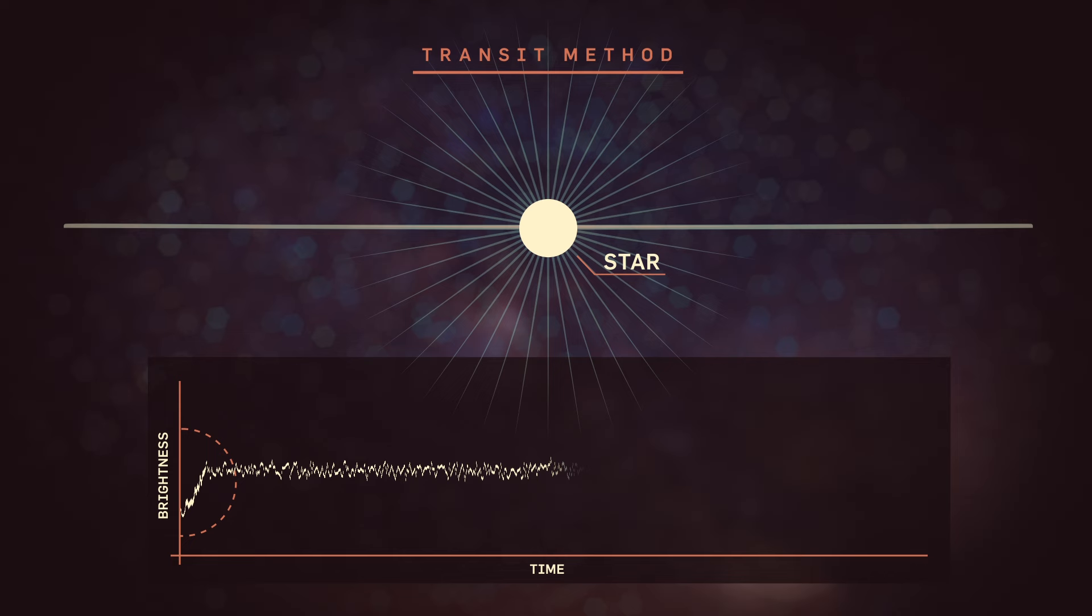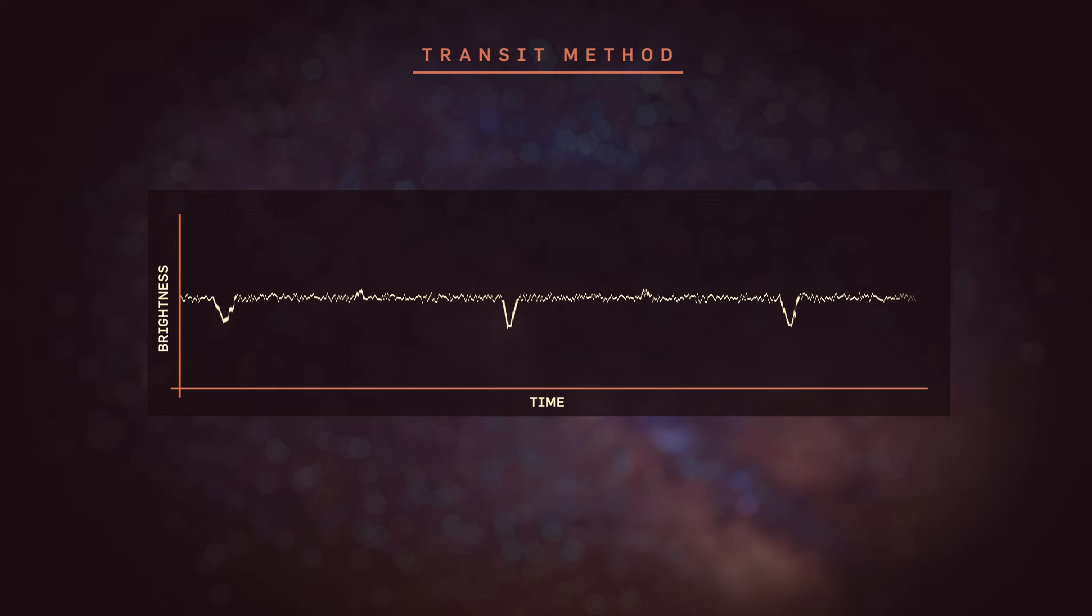And once you see one, well, that's a candidate for a planet. And then you wait to see, are these dips happening periodically? If it was just some random event, they'll happen randomly. If they're planets, they'll happen periodically with the same period between dips.